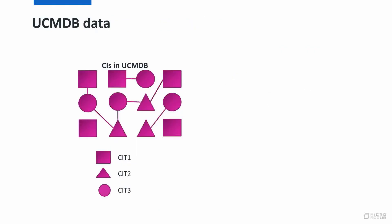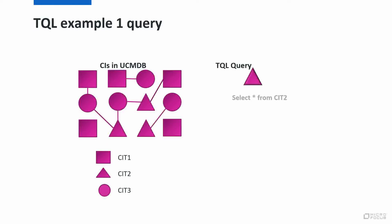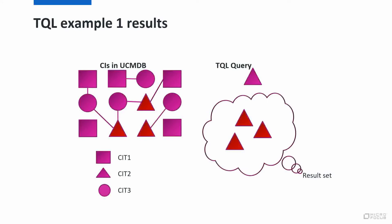Let's take a quick look at how we can do these selects. Say the CIs in UCMDB are CI Type 1 (a square), CI Type 2 (a triangle), and CI Type 3 (a circle). If we wanted a query to show all of the triangles, the back-end SQL would be something like 'select * from CI Type 2.' How many triangles would we return? Three — there are 3 triangles that exist.